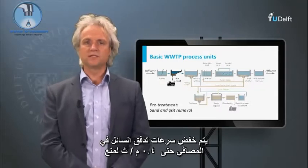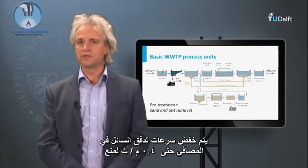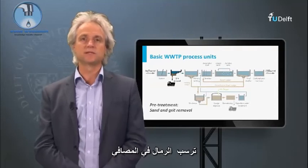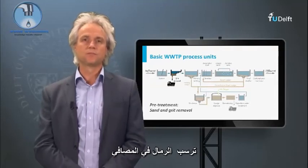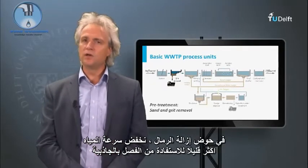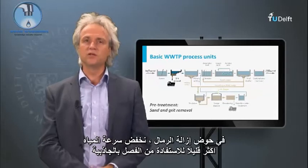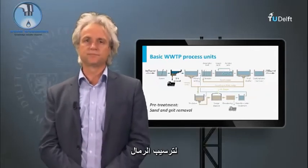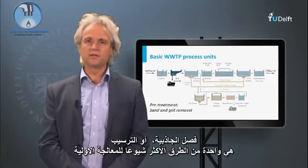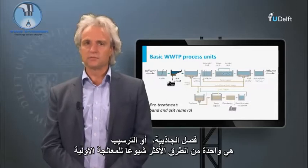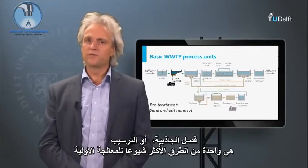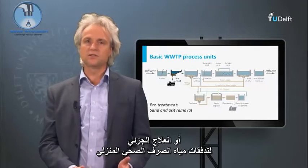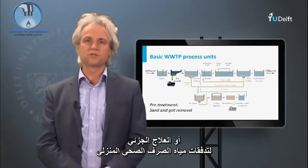Lowering of the liquid velocities in screens is restricted to 0.4 meters per second to prevent sand from settling in the screens. In the grit removal device, we lower the liquid velocity a bit further to make use of gravity separation to settle the sand. Gravity separation, or settling, or sedimentation, is one of the most common approaches to pre-treat or partially treat domestic and municipal sewage flows.